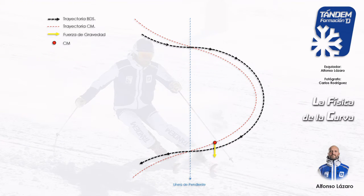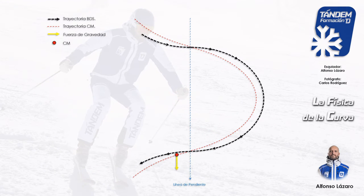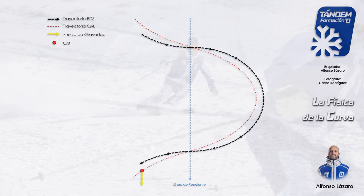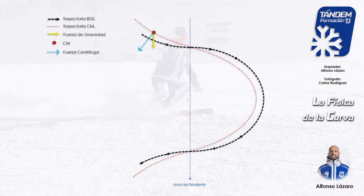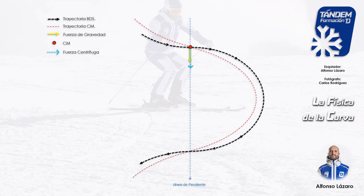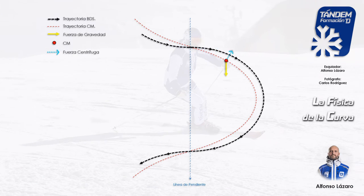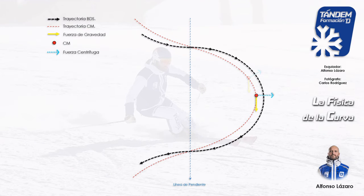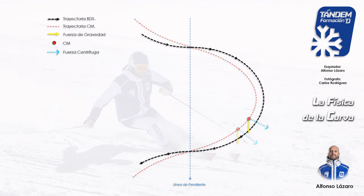Además de esta fuerza que produce el movimiento, el esquiador experimenta la sensación de que sobre él actúa otra fuerza que le expulsa hacia el exterior de la curva al describir el movimiento circular. Esta fuerza solo la siente el propio esquiador, como observador en movimiento acelerado, y no un observador externo que se encuentre en reposo. Esta fuerza es una fuerza de inercia que llamamos fuerza centrífuga, que en realidad no existe. Según la ley de inercia, o primera ley de Newton, todo cuerpo permanecerá en reposo o en movimiento rectilíneo uniforme, a menos que se aplique una fuerza externa sobre él. La fuerza centrífuga se utiliza para poder explicar la existencia de la fuerza centrípeta, que sí que es real, en movimientos circulares sobre sistemas de referencia acelerados.